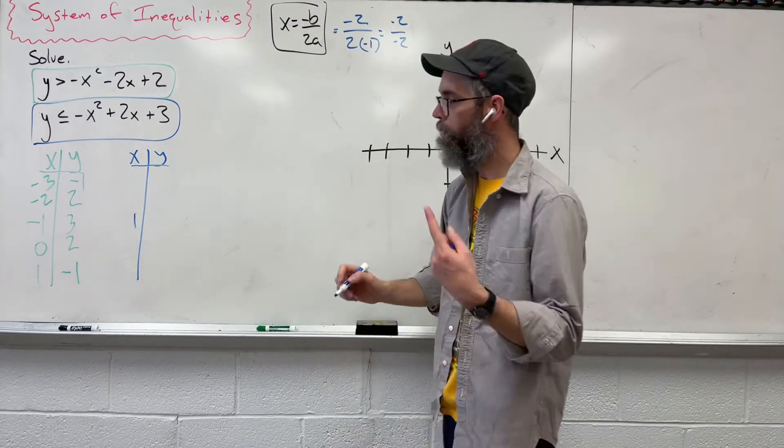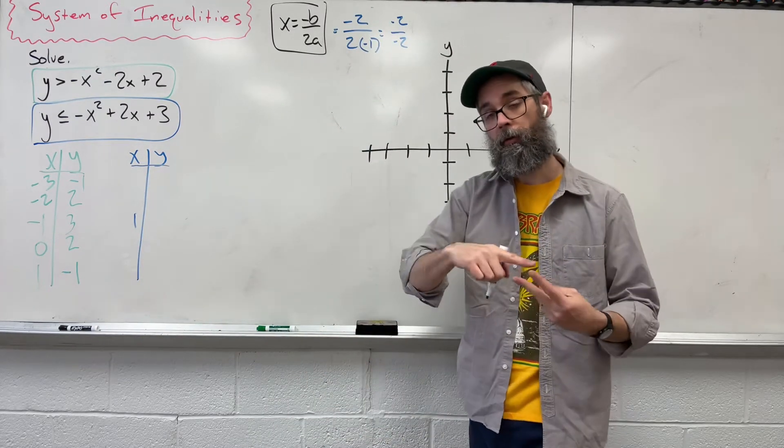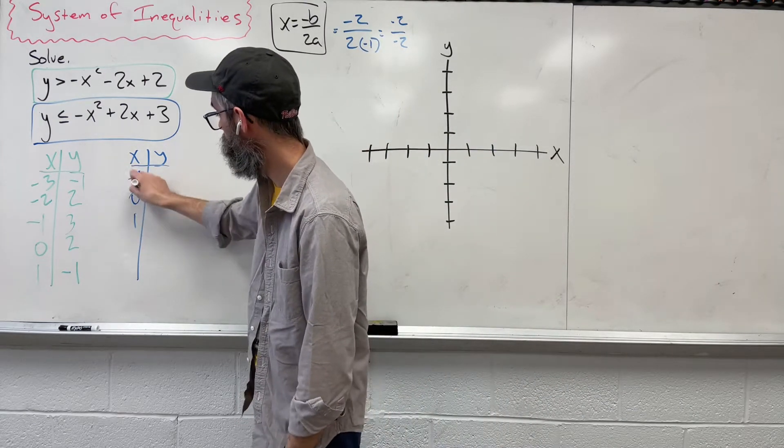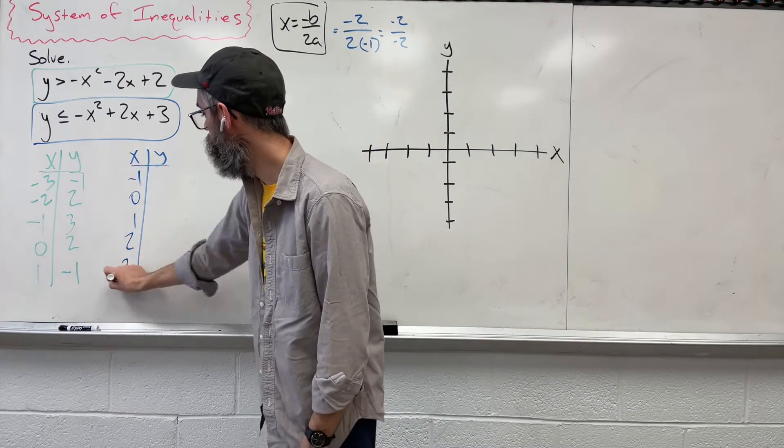So let's create a t-chart over here. Put that 1 in the middle. Now we need to fill in the rest of those x values where our number is smaller, where our number is larger. So smaller: 0, negative 1, larger: 2 and 3.